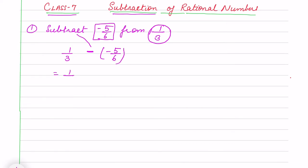Now I will simplify it. 1/3 negative of -5/6 will be positive and it will be plus 5.